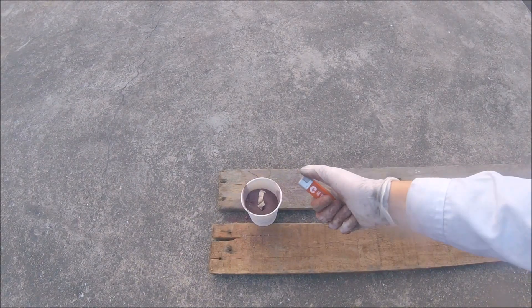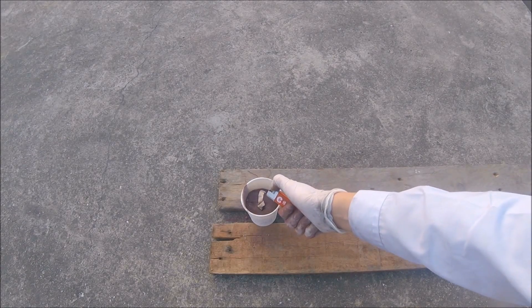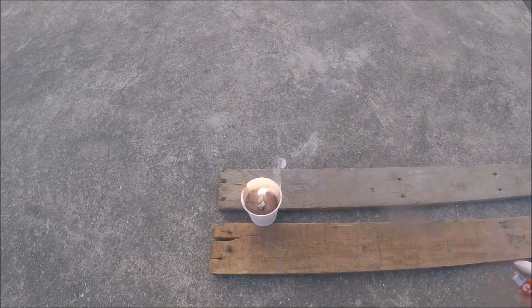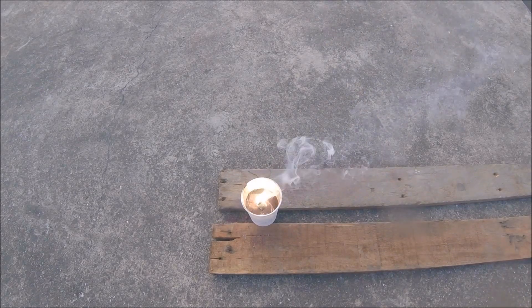Thermite is actually somewhat difficult to initiate. The temperature required is above the melting temperature of aluminum. It can be achieved by the combustion of a piece of magnesium ribbon.